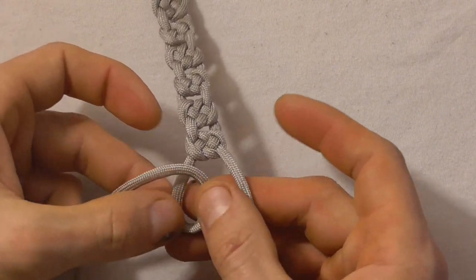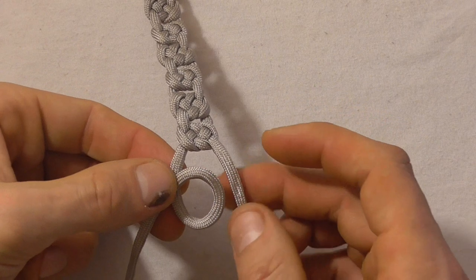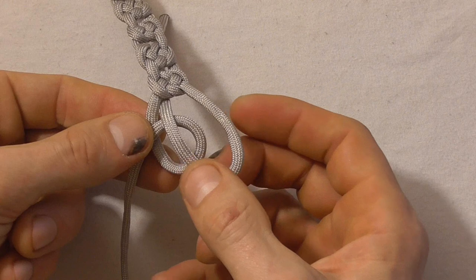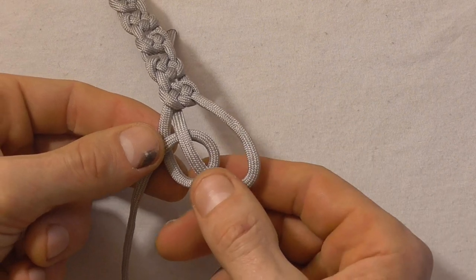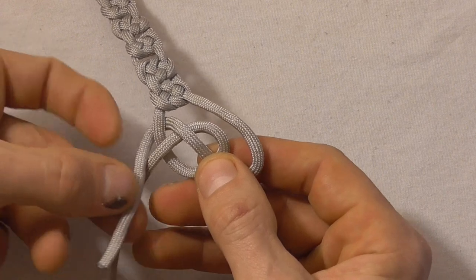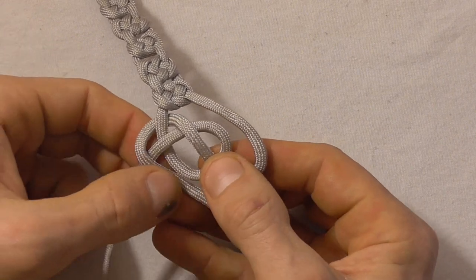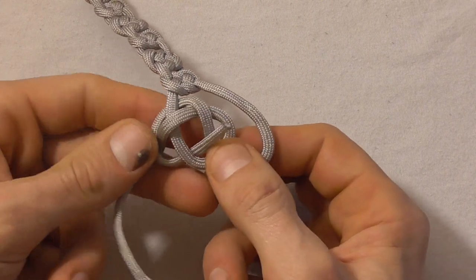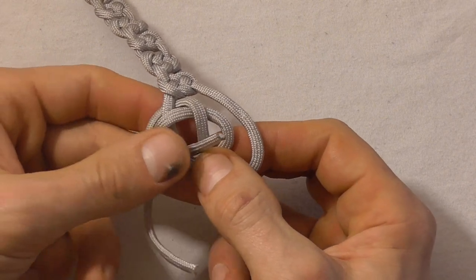And we'll do that by forming an overhand loop on the left hand side. And then with our right hand strand just coming in over that loop and under the top left leg. Going over, up through that left loop, and then down.